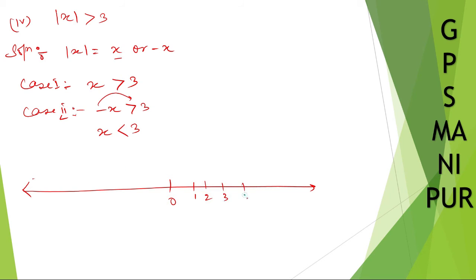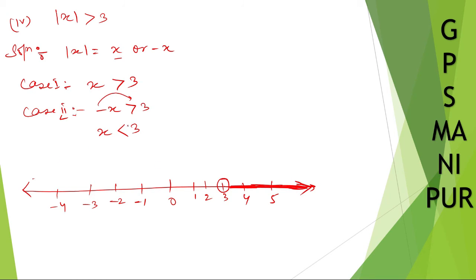Let us represent on a number line: 1, 2, 3, 4, 5 and minus 1, minus 2, minus 3, minus 4. Do it properly using pencil and scale, nicely, so you may get good marks. X is greater than 3 — it's not equal to, so draw an open circle at 3 and the numbers go in the positive direction. And x is less than minus 3, so take minus 3 and less than means going in the negative direction.